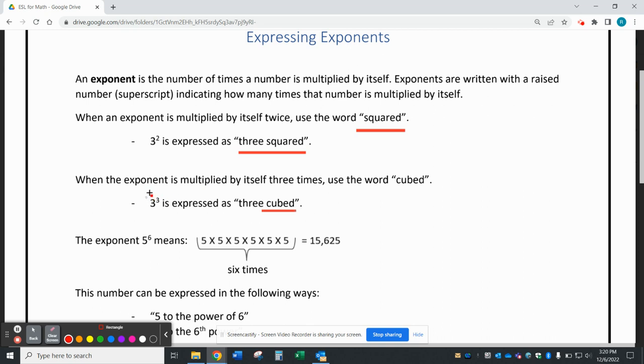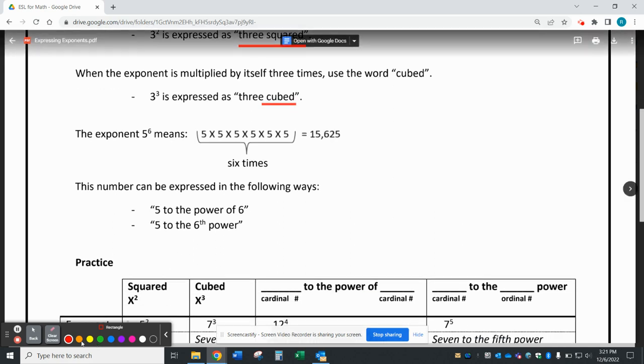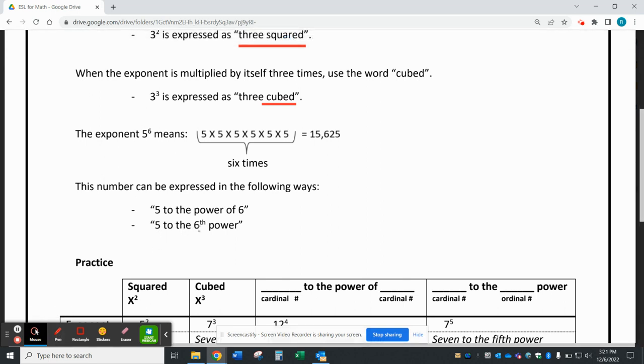The exponent 5 to the power of 6 means 5 times 5 times 5 times 5, 6 times. And we can express this in two ways. We can express the exponent as 5 to the power of 6, or we can express it as 5 to the 6th power.